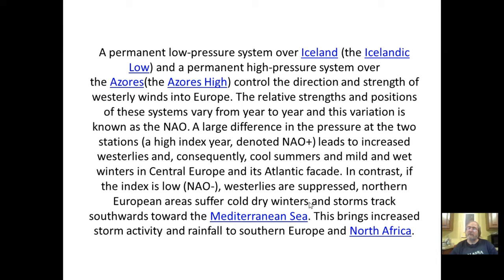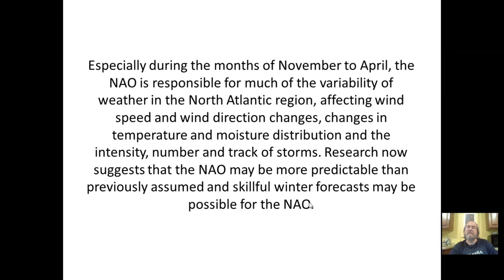During a negative NAO, storms track southwards toward the Mediterranean Sea, bringing increased storm activity and rainfall to southern Europe and North Africa, especially during November to April. The NAO is responsible for much of the weather variability in the North Atlantic region, affecting wind speed, wind direction, temperature, moisture distribution, and storm intensity. Research now suggests that the NAO may be more predictable than previously assumed.